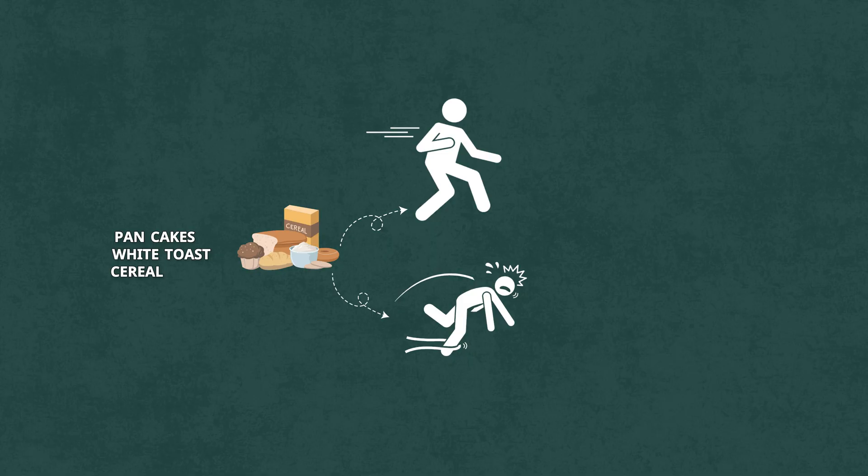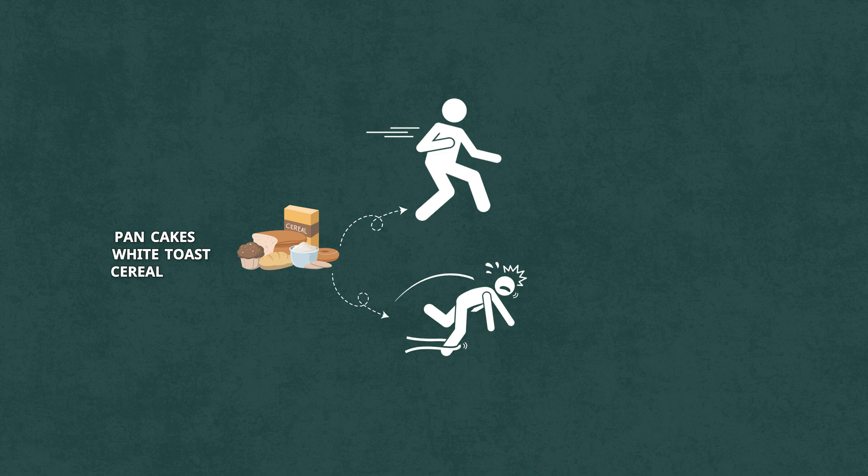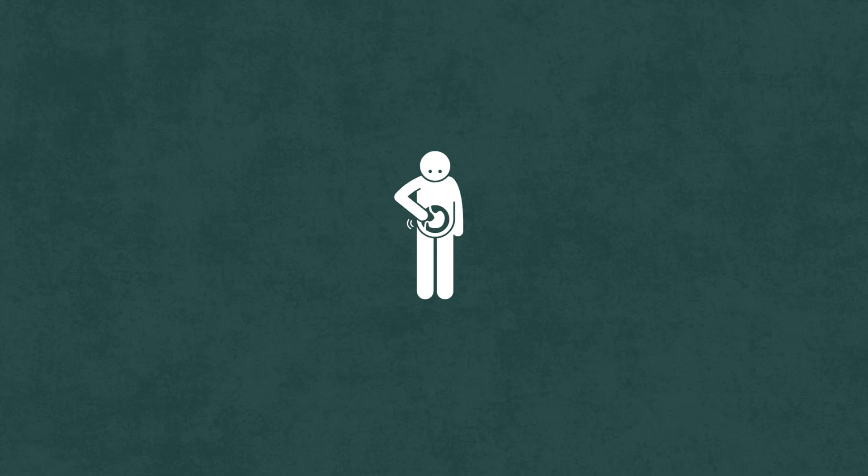That's why you suddenly feel foggy, lazy, or even weirdly anxious halfway through the morning. It's not that you're tired, it's your breakfast turning on you. Refined carbs digest fast, which means they don't keep you full or focused. It's like trying to run a car on lighter fluid. It burns hot for a second, then dies out.